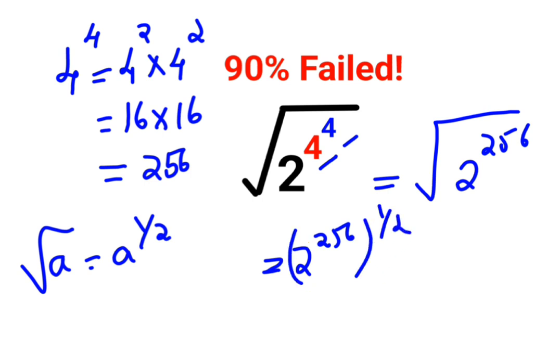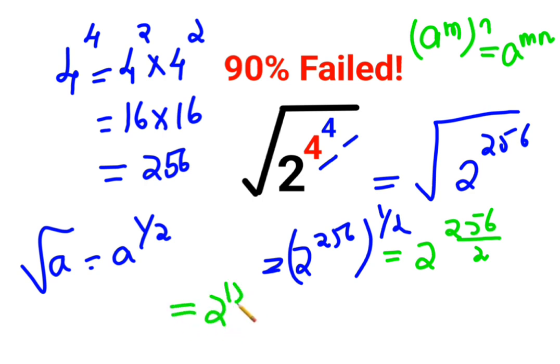And we know that in indices, a raised to m the whole raised to n can be written as a raised to m into n. So this can be written as 2 raised to 256 upon 2, so that gets you the final answer as 2 raised to 128.